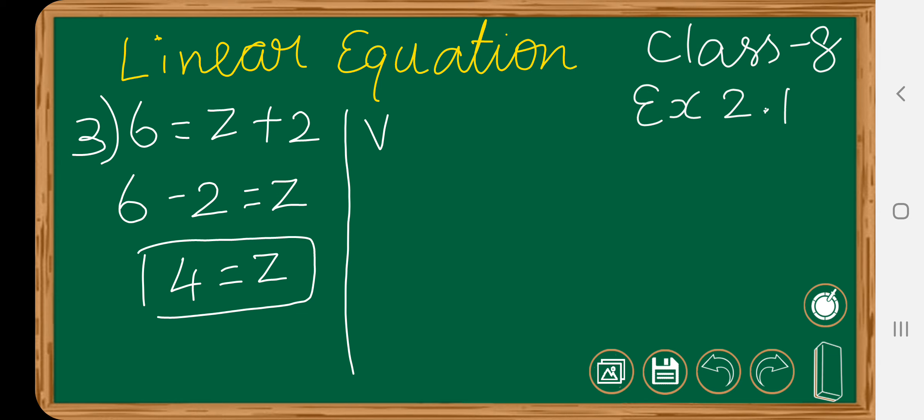You can either write this side or that side, anyway the answer will be same. Let's verify your answer. Now 6 equals to, we got the z value, that is 4 plus 2, so 6 equals to 6. In linear equation, if you go with LHS equals to RHS, then you can verify your answer yourself whether it is right or wrong.